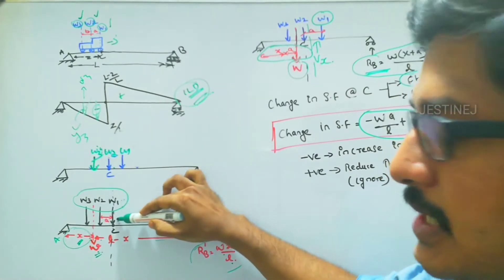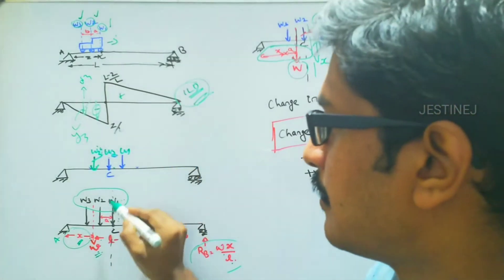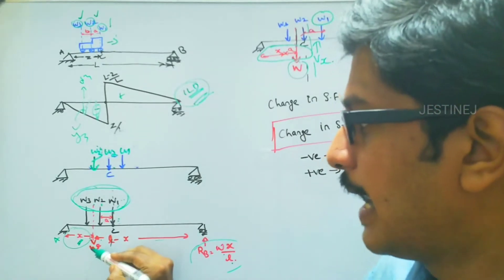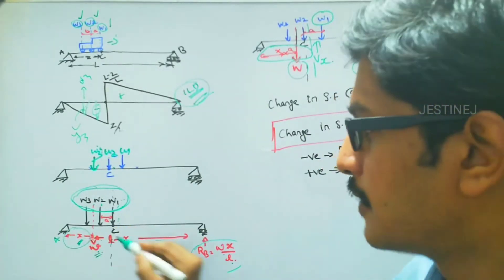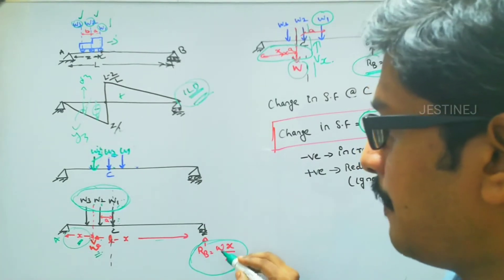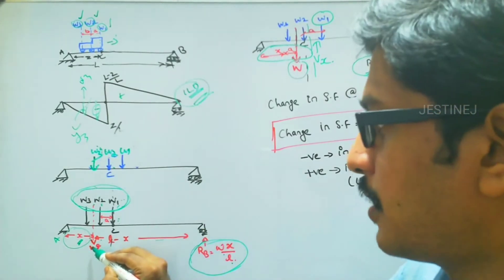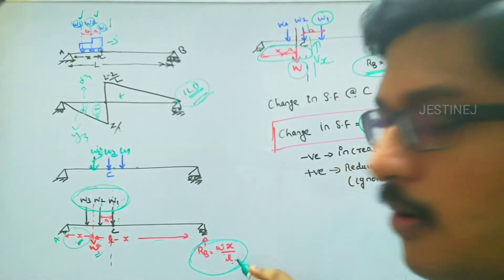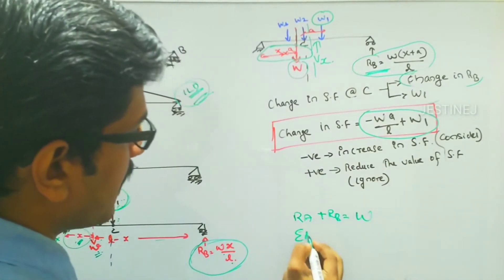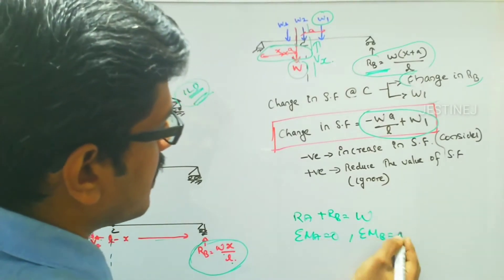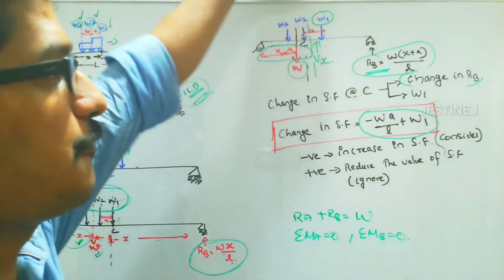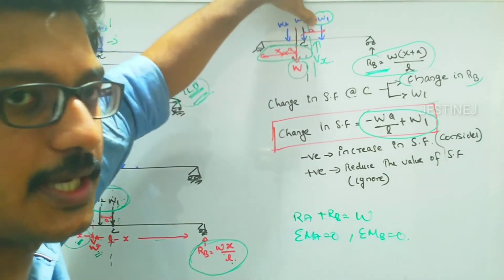So if W1 is acting at the point C, the total load W3 plus W2 plus W1 will be capital W, and it is acting at a distance x from support A. So the remaining distance will be L minus x. We can easily find out the reaction at B will be the capital W, the total load multiplied by the distance x divided by L, or you can use reaction Ra plus Rb equals W. Then sigma Ma equals 0, you can find out the value of Rb equals Wx by L.